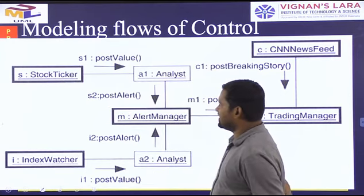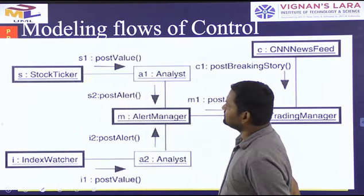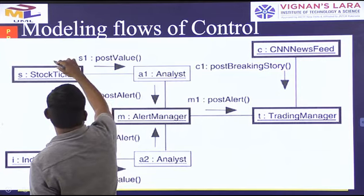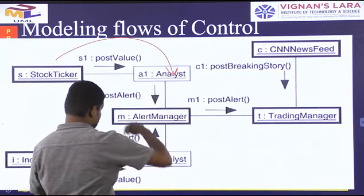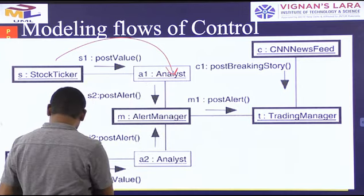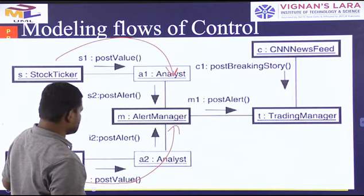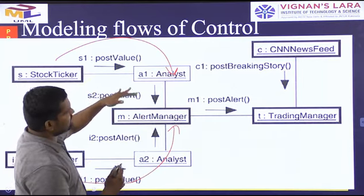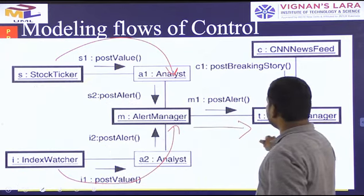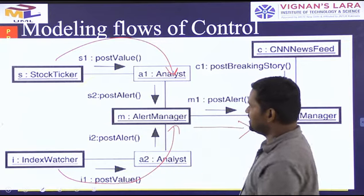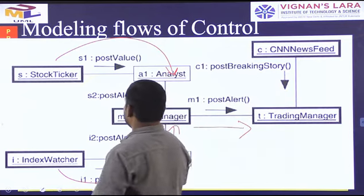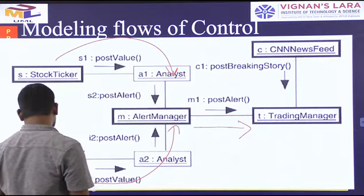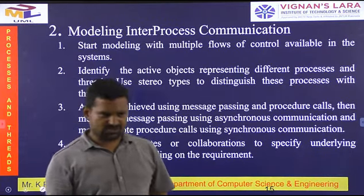Modeling the flow of control: the stock ticker is the active class. From that active class, the flow goes — posted value to analyst, analyst to alert manager, and also to index watcher. Index watcher to posted value, analyst to alert manager. Two types of flows are there. With these two types of flows, the concurrent flow is developed, going through the same alternative manager — also stock ticker to index watcher.